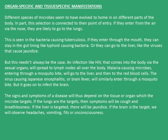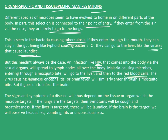The next topic is organ-specific and tissue-specific manifestations. Different species of microbes have evolved to target different parts of the body, partly connected to their point of entry. If they enter from the air via the nose, they are likely to go to the lungs, as seen with tuberculosis-causing bacteria. If bacteria enter through the mouth, they can stay in the gut lining like typhoid-causing bacteria, or go to the liver like viruses that cause jaundice. An HIV infection enters via the sexual organs but spreads to lymph nodes all over the body. Malaria-causing microbes go to the liver and then to red blood cells, while the Japanese encephalitis virus enters through a mosquito bite but ultimately infects the brain.